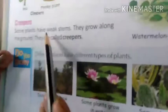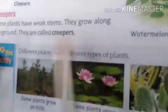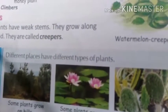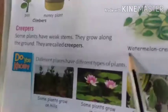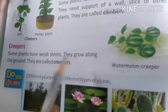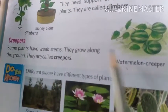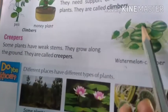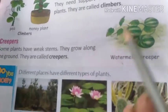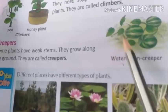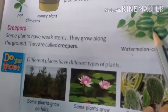Now, creepers. Some plants have weak stems. They grow along the ground. They are called creepers. Creepers grow along the ground — they cannot grow upright. Examples are cucumber and pumpkin.